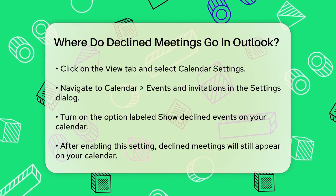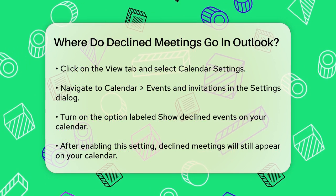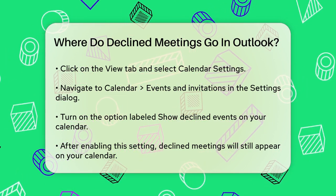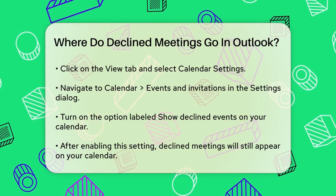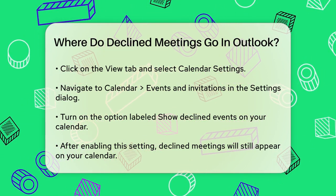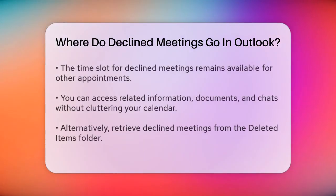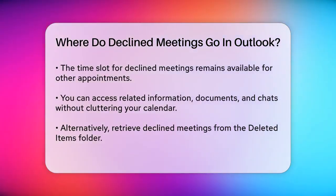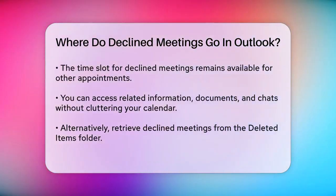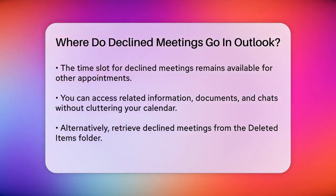Once this setting is enabled, any meeting you decline will still appear on your calendar, but the time slot will remain available for other appointments. This way, you can easily access information, documents, and chats related to the meeting without cluttering your calendar.